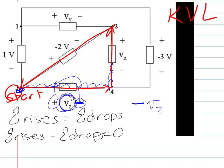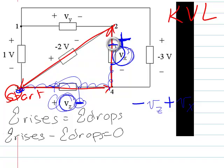Now we have another voltage element, which is VX, and it happens to be that as we hop over, we land on a voltage rise — a voltage increase. So we write a plus sign and we write plus VX, and then we keep going on our trip.